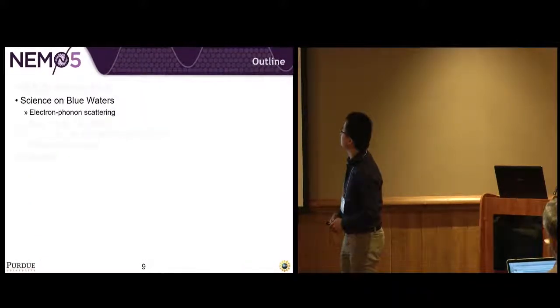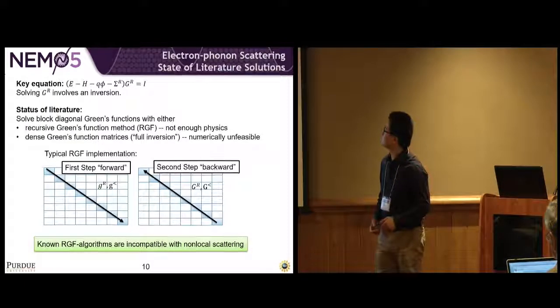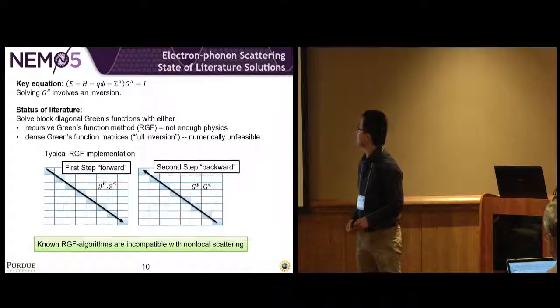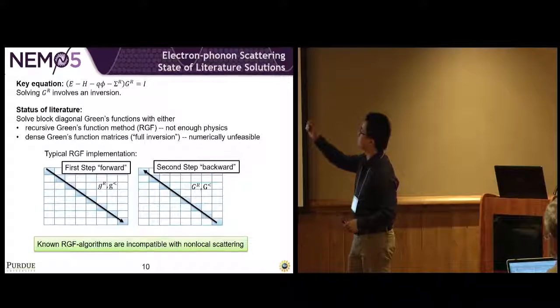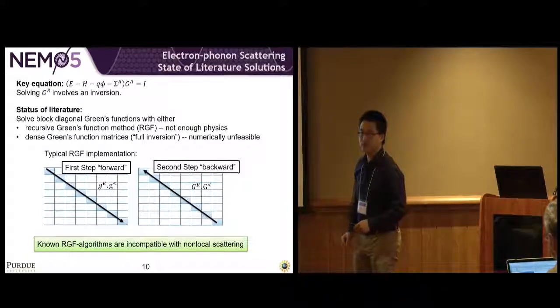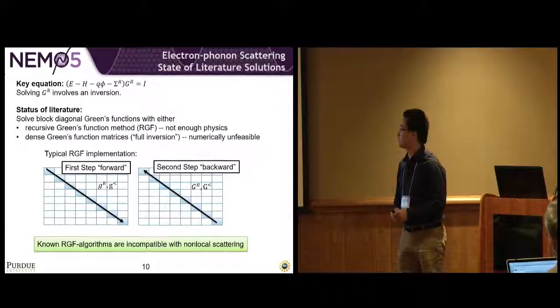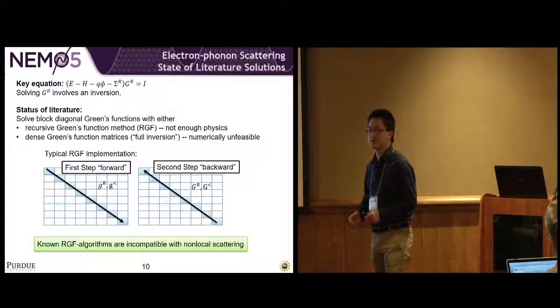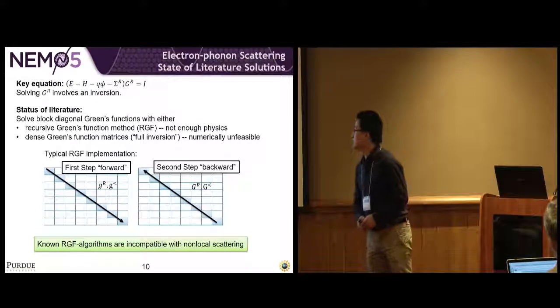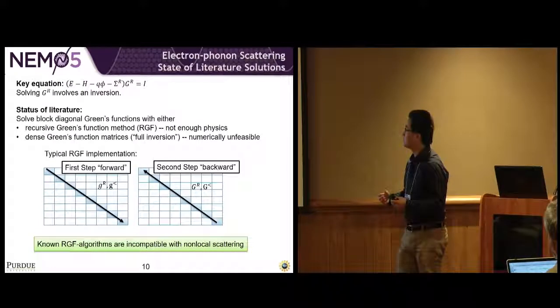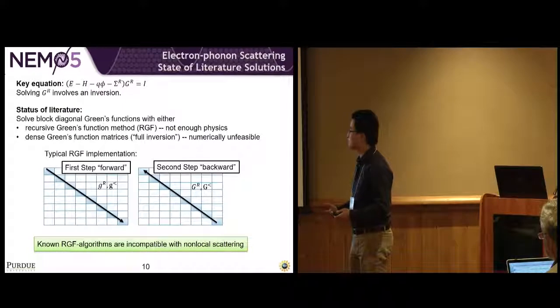Now I'll go over our science projects on Blue Waters. The first is electron-phonon scattering. In order to model the electron-phonon scattering, we need to solve these GR matrices in the equation. There are two ways to solve this equation: one is to use a recursive Green's function, the RGF method. The other is to use a full dense block inversion.